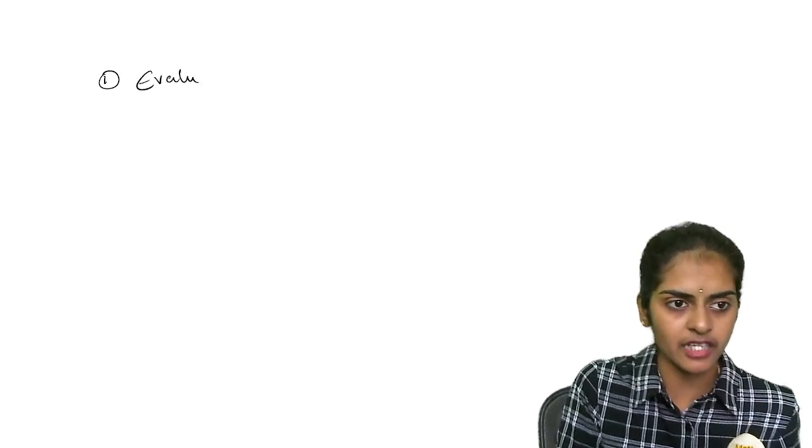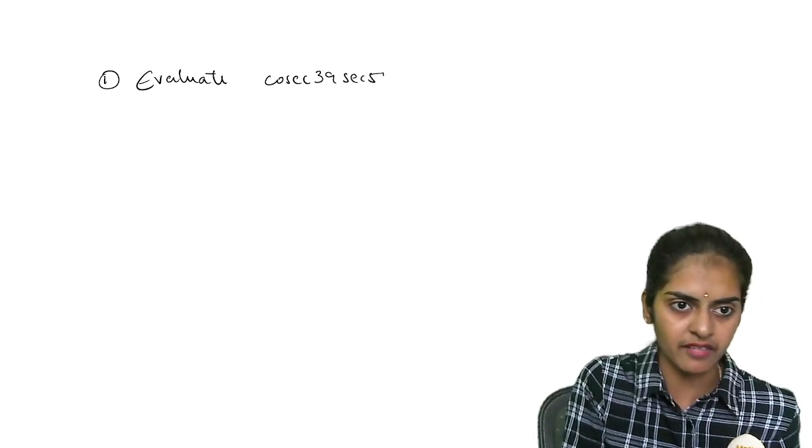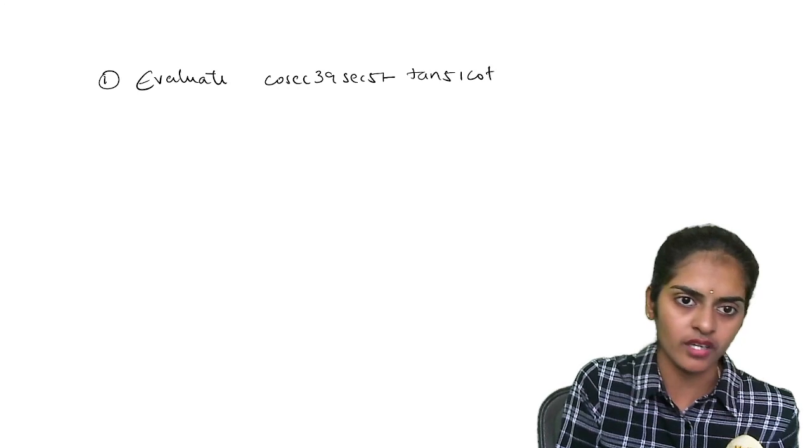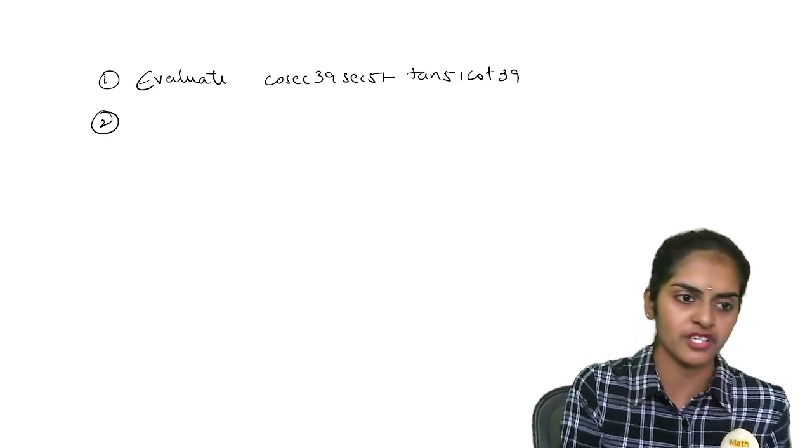Firstly, you will get a question of this model. You may get a question, evaluate secant 39 secant 51, this is previous year question, minus tan 51 cot 39. So you will simply use complementary angles concept and solve this question.